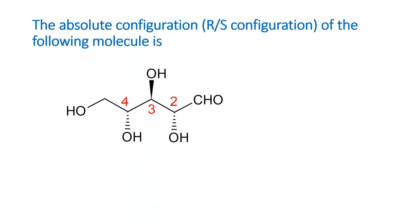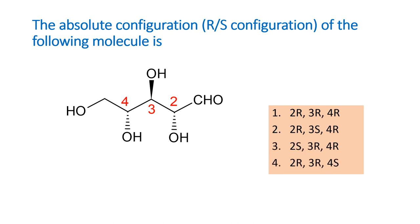The question asks for the absolute configuration — R/S configuration — for the following molecules, with options also given. When you know the term 'absolute configuration,' it means you are going to assign R or S notation for the carbon stereocenters. This is called absolute configuration because the R/S notation assigned to this particular structure will remain the same whenever we write it — we are not using some other structure as a reference, but instead using CIP rules.